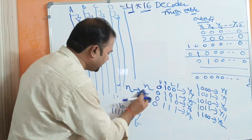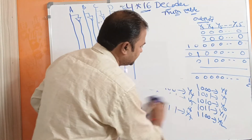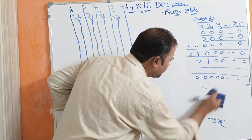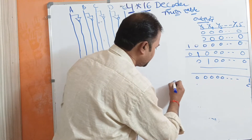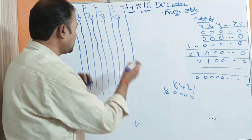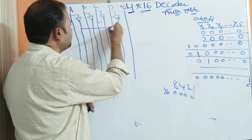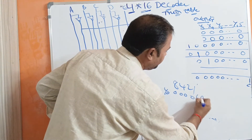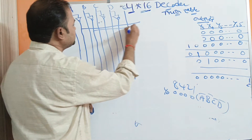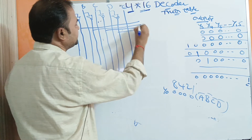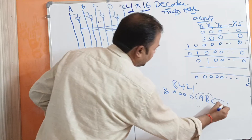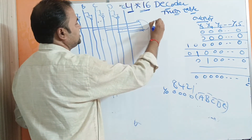When Y0 is active, the inputs are all 0s — all 0s means A-bar, B-bar, C-bar, D-bar in 8421 notation. So this line represents B-bar, this line represents C-bar, this line represents D-bar. We also require enable input. Applying the AND operation with enable input — this represents Y0.